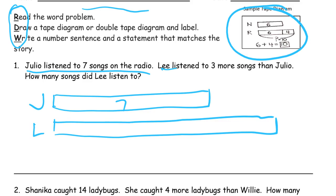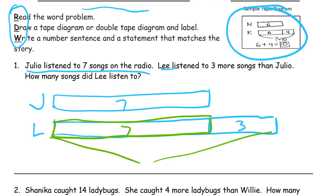Lee listened to three more songs than Julio, so if Lee listened to more, his piece of tape is going to be longer. That's Lee's piece of tape, labeled L. Now we don't know exactly how long Lee's tape is, but we do know how long the more is. This part is the more, and we know that's three. And this part here — we already know, don't we? Because it's the same as Julio's. So if Julio's is seven, then this piece here also has to be seven. The question is how many songs are in Lee's tape — that's what we have to find out.